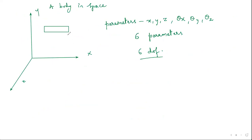So this is all about degrees of freedom. A body in space can be rotated about x, y, z and translated along x, y, and z — that's why it has six degrees of freedom. I hope you all understood. Thank you.